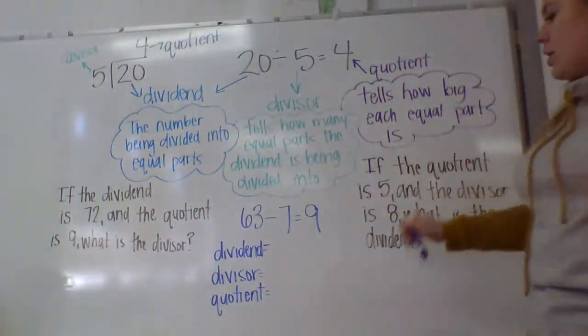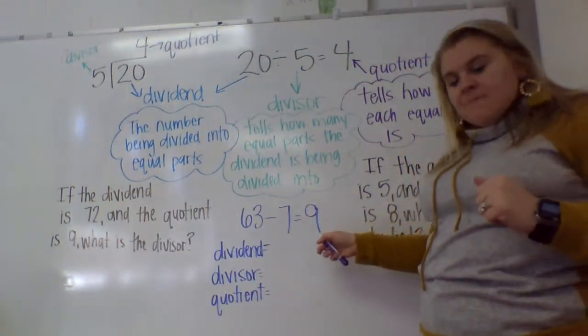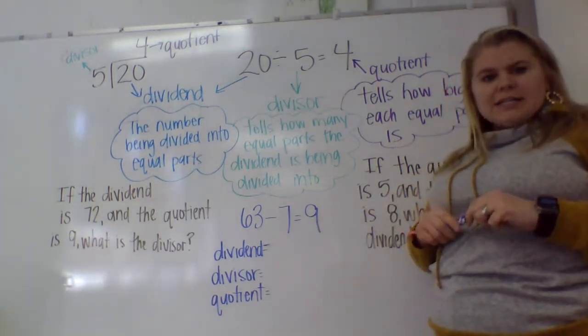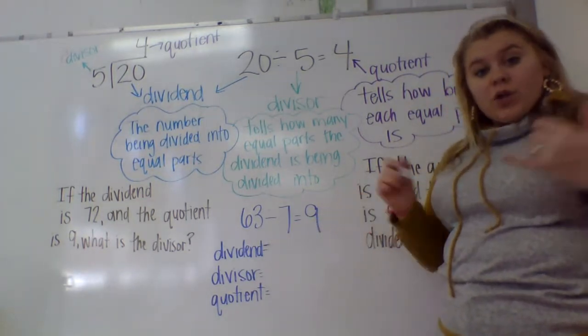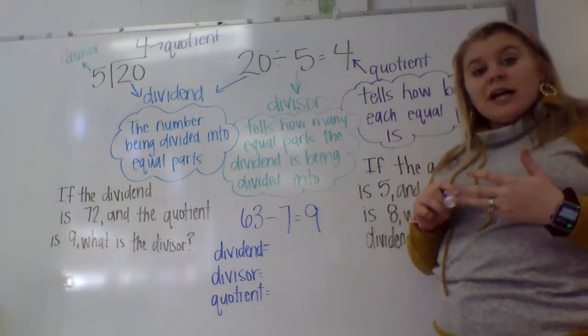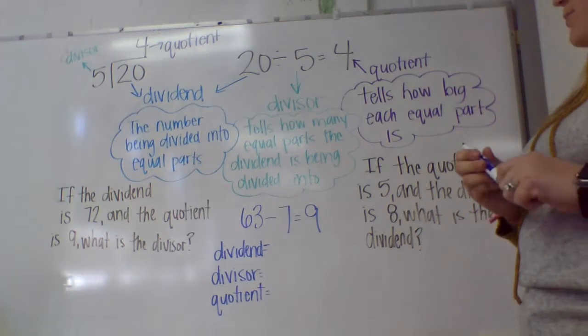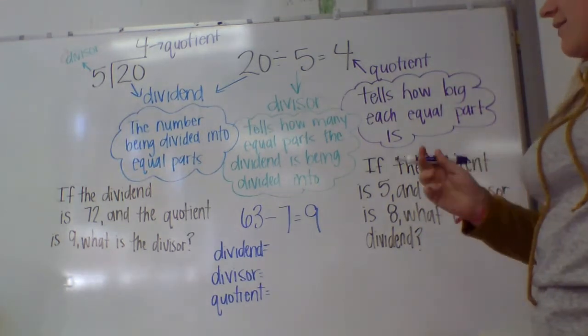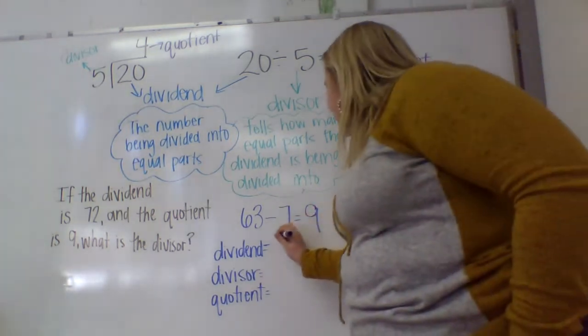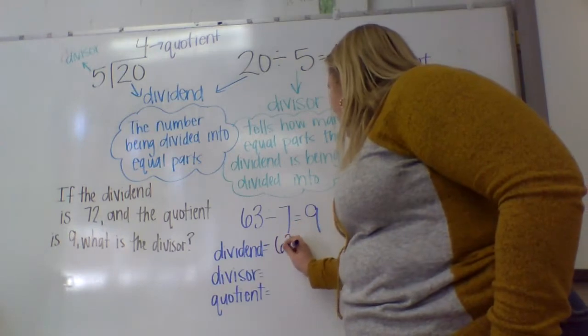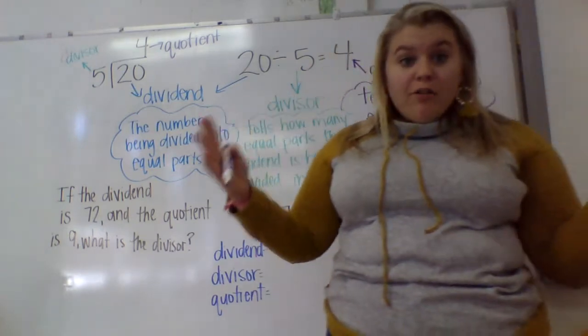So, you're going to have several problems like this. 63 divided by 7 equals 9. And it's going to want you to identify which one's the dividend, which one's the divisor, which one's the quotient. Our dividend is always our biggest number. So if it's 63 divided by 7 equals 9, our dividend would be 63. That's the total number of pieces I have.